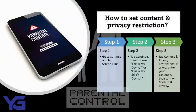How do we set Content and Privacy Restriction? Step 1: Go to Settings and tap Screen Time. Step 2: Tap Continue, then choose 'This is my device' or 'This is my child's device.' Step 3: Tap Content and Privacy Restrictions. If asked, enter your passcode, then turn on Content and Privacy. Step 4: Make sure to choose a passcode that's different from the passcode that you use to unlock your device. To change or turn off the passcode on your child's device, tap Settings, Screen Time, then your child's name. Then tap 'Change Screen Time Passcode' or 'Turn off Screen Time Passcode,' and authenticate the change with Face ID, Touch ID, or your device passcode.